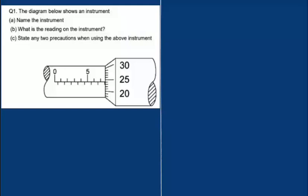Okay, so here's a question. The diagram below shows an instrument. Name the instrument. Now this instrument is what we call a micrometer screw gauge.